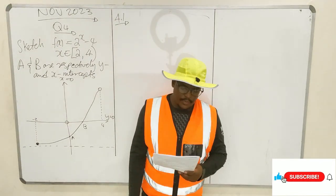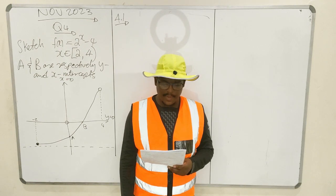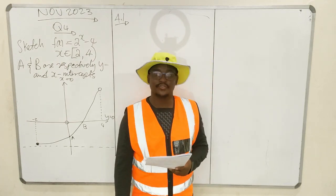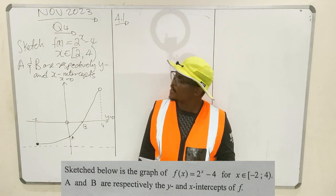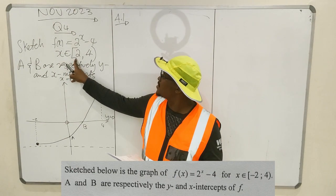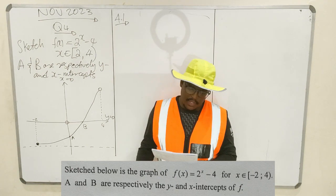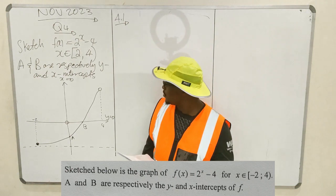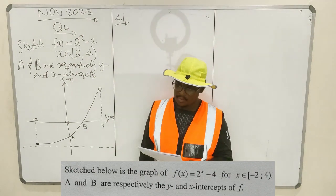Now I'm doing Question 4 of November 2023 Question Paper, Mathematics Paper 1, and these are exponential functions. Question 4 reads as follows: sketched below is a graph of f of x equals 2 raised to x minus 4, on the interval from x equal to minus 2 before x equal to 4. A and b are respectively the y-intercept and x-intercept of f.